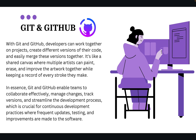We use a centralized single source code repository so that operations can access the same code that the development team plans to release. With a version control system, we have a centralized code repository, making it easy to roll out or roll back faulty code, and allowing both development and operations teams to use the same code for fast application releases.